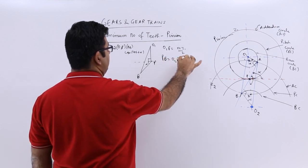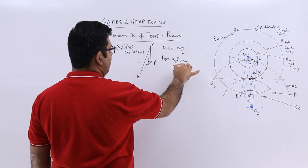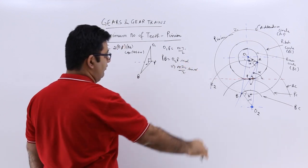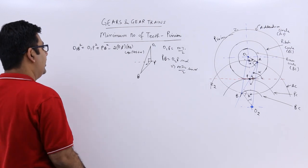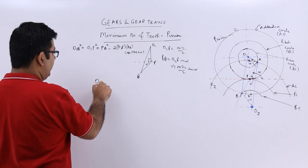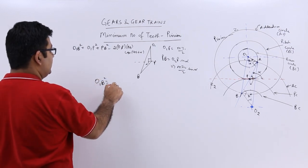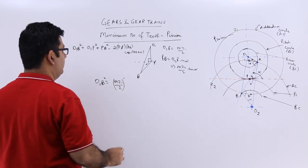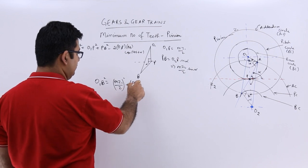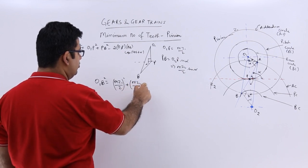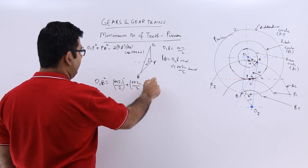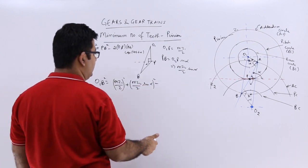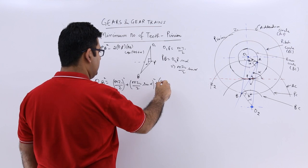So you will get O₁B² equals (m·z₁/2)² plus (m·z₂/2·sin α)² plus 2 times (m·z₁/2)(m·z₂/2·sin α), which becomes sin²α.